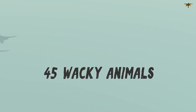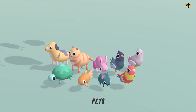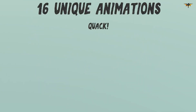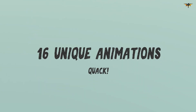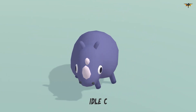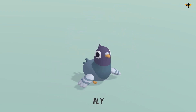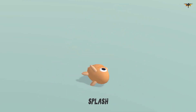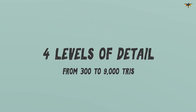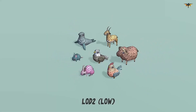With the Quirky Series Animals Mega Pack Volumes 1 and 2, you will get around 90 animals for your mobile, AR, and VR projects. All of them have several animations that can be useful for your video games, in addition to 4 levels of detail.